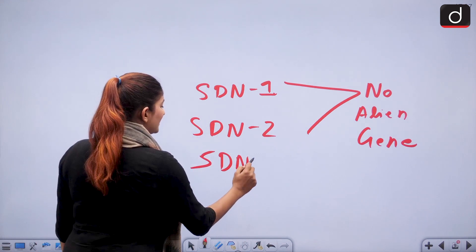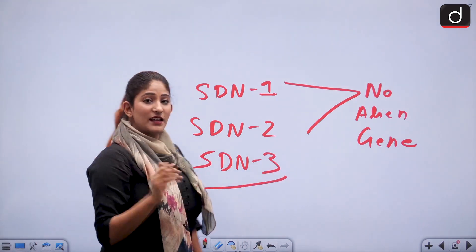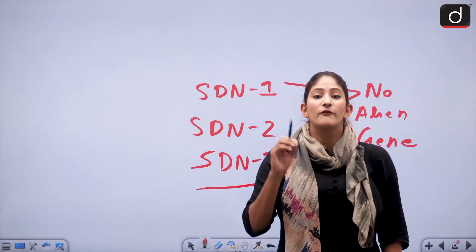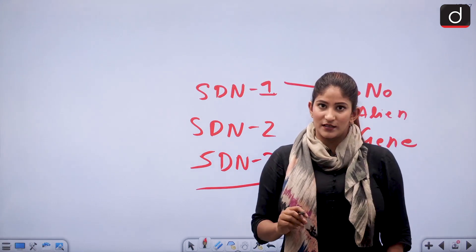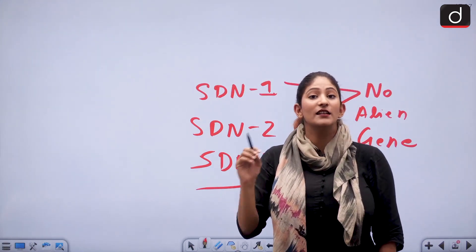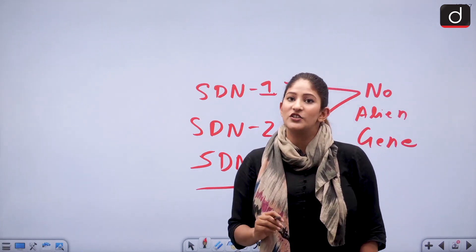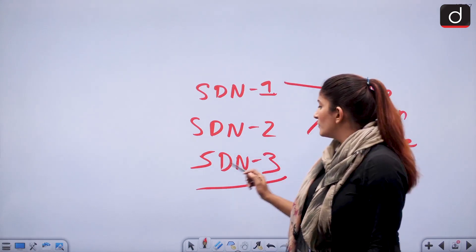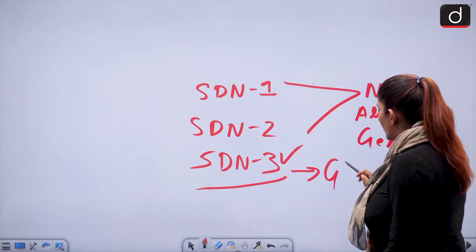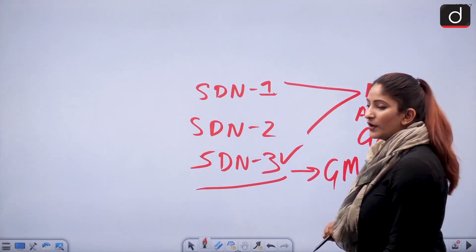In SDN3, large-scale DNA modification takes place. Here, a foreign or alien organism or gene is introduced, and it is very similar to genetically modified crops.